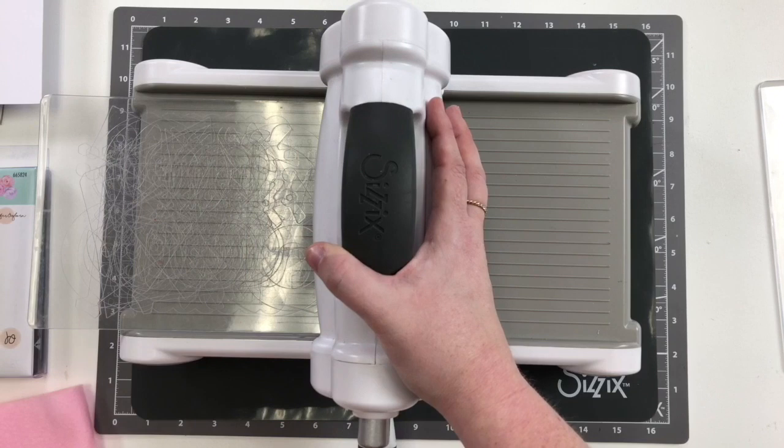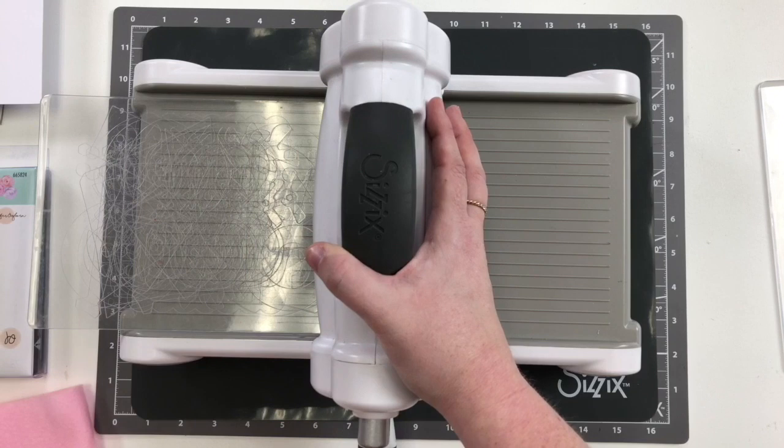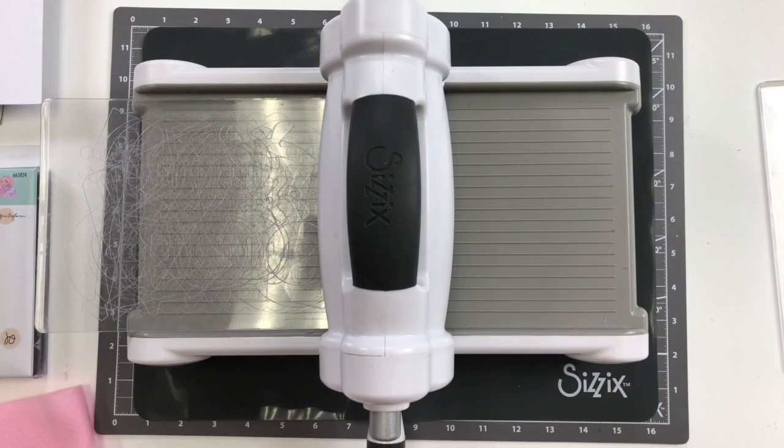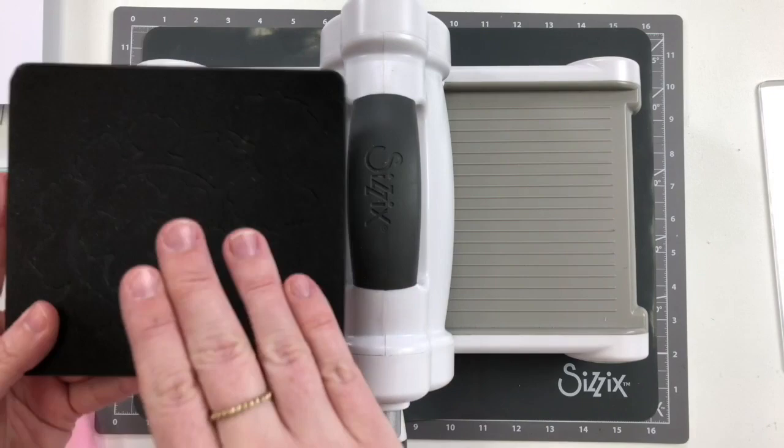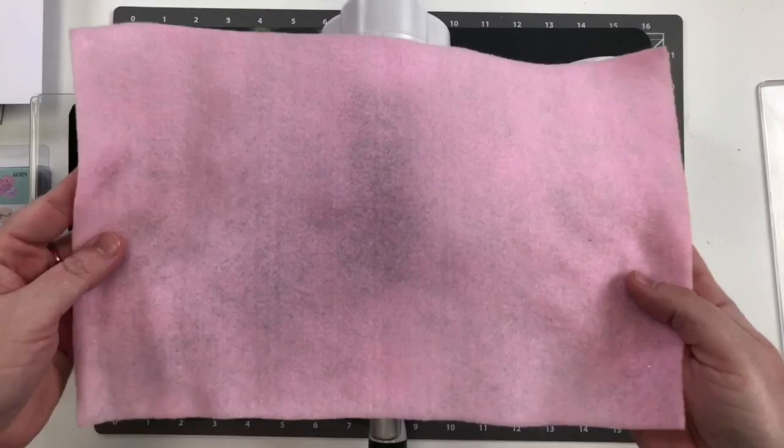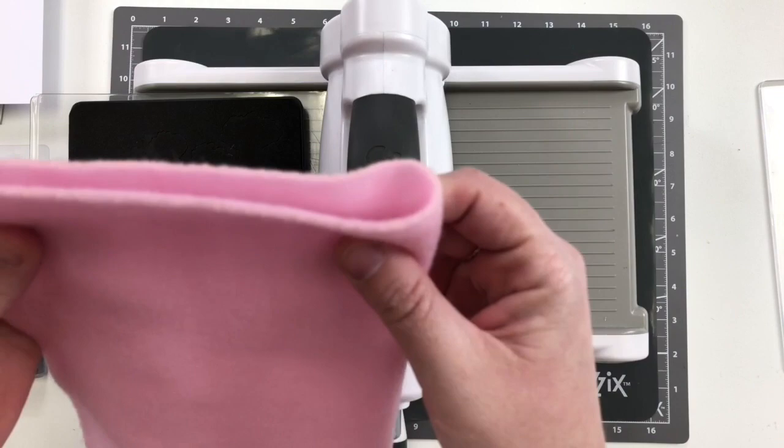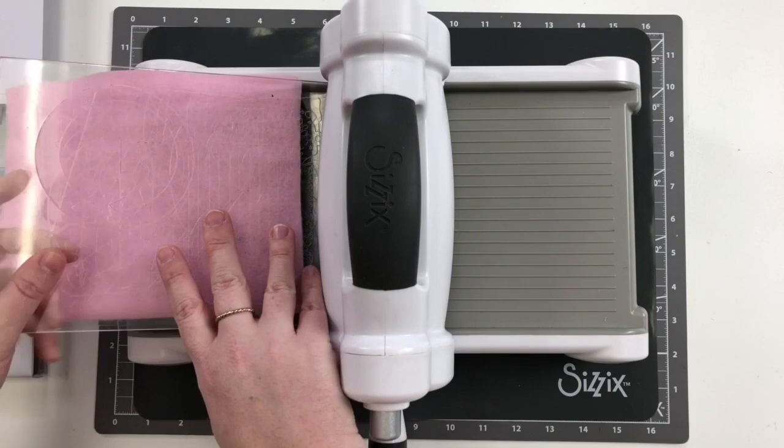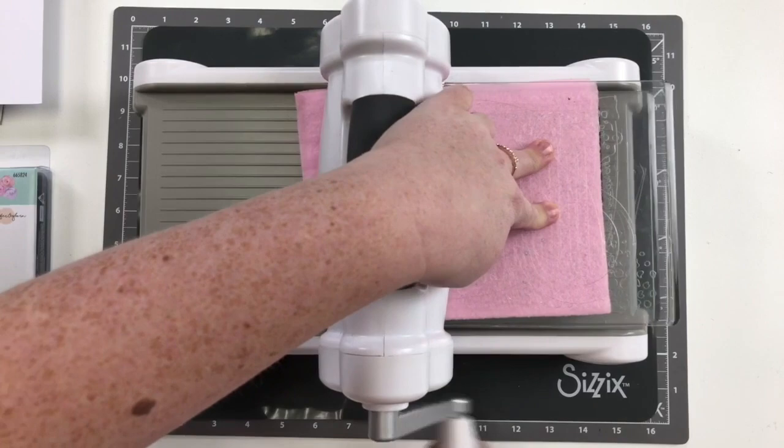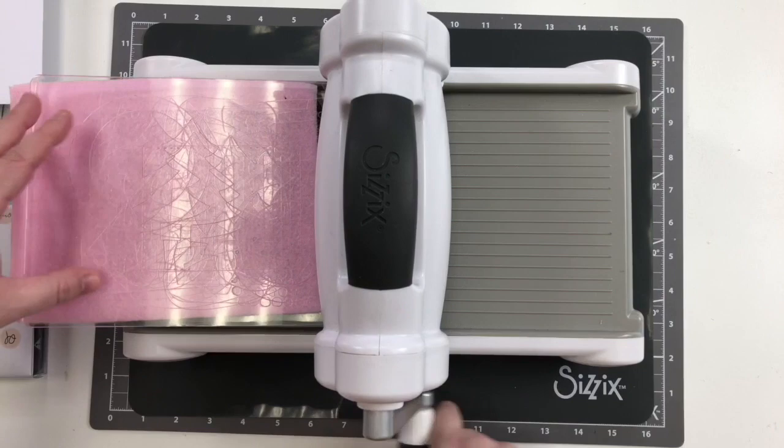So with the big die, the sandwich when you're cutting it on any of our big shot machines, so I'm using the big shot right here. But if you were to cut this on the fold away or the plus, it's the same sandwich. So you basically put your first cutting pad down, then you put the die with the blade facing up. And then I've got my felt. I'm going to put two thick layers of felt. And then to finish my sandwich, I just need one more top cutting mat. Normally you only need to run it through once, but because I am cutting through a thicker felt, I'm just going to hold it in place as I run it back through.